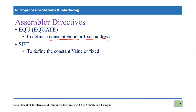Next is SET, which is again used to define a constant value or a fixed address. So what is the difference between SET and EQUATE? The difference is that the value assigned with SET may be reassigned later in the program. That means if we define 0x25 for NUM2, we can later reassign the same variable to a different value. Equate values can never be reassigned, but SET can be used for reassigning values.